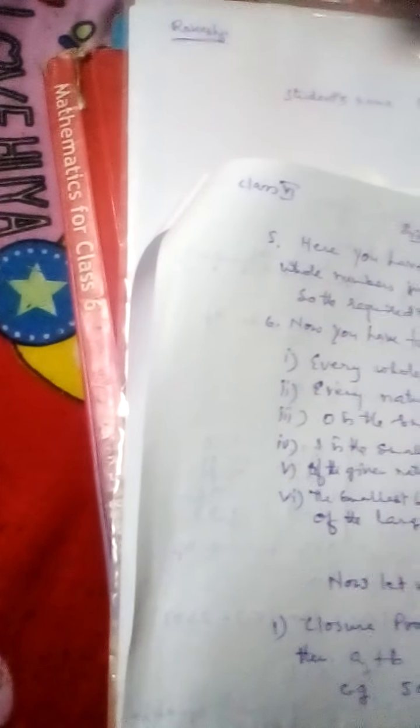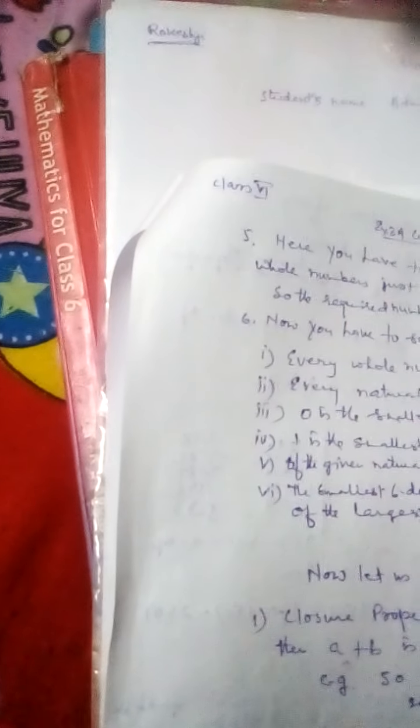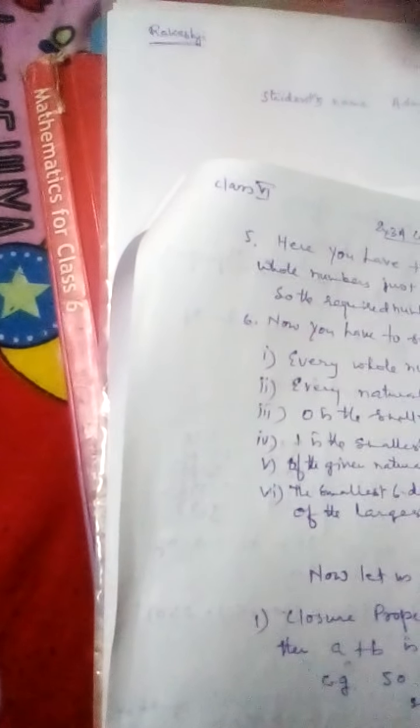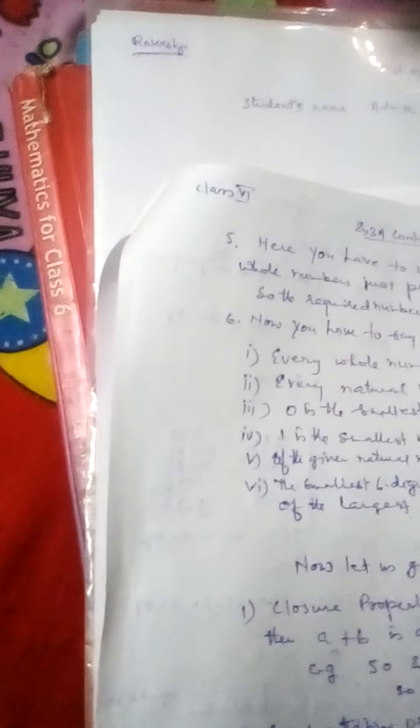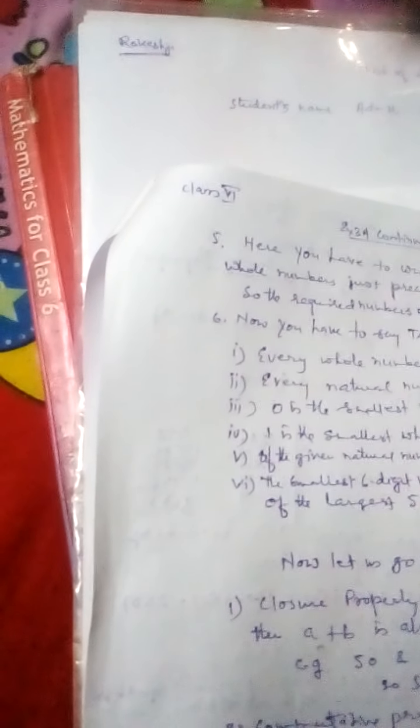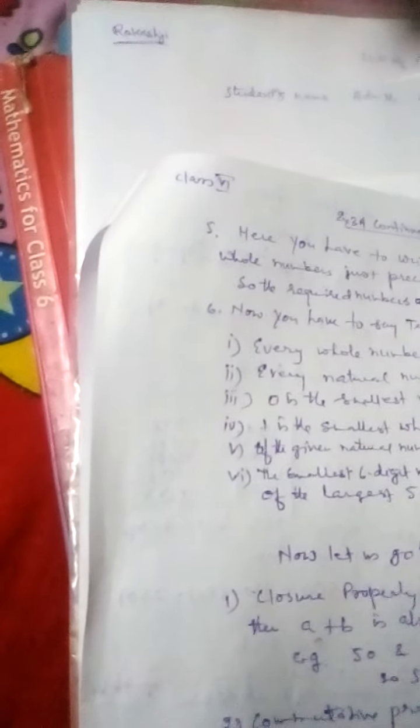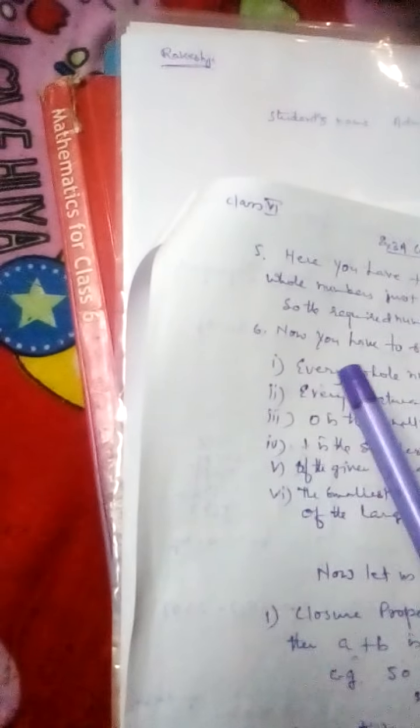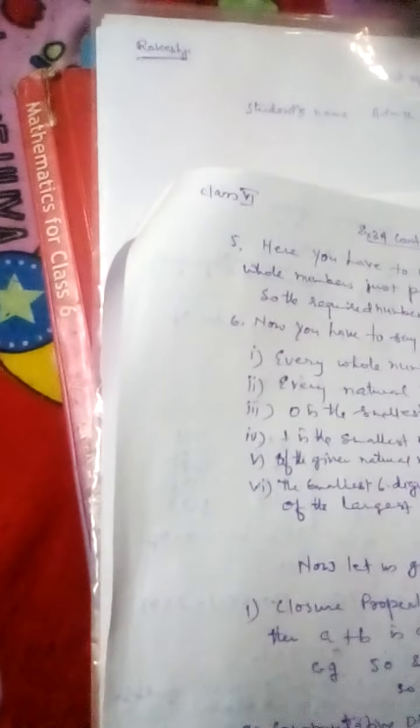Question number 5: Here you have to write 3 consecutive numbers just preceding between 75 lakh 1001. So it will be 75 lakh 1000, 75 lakh 9999, and 75 lakh 9998.